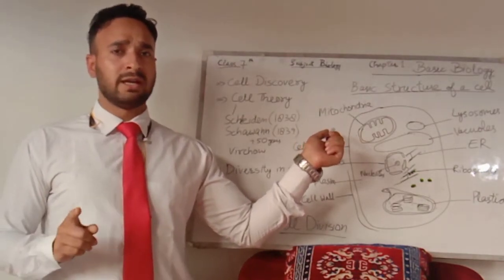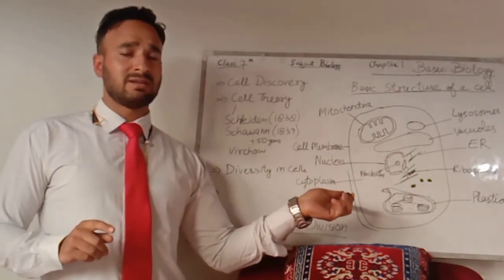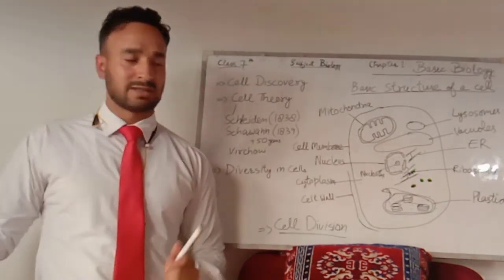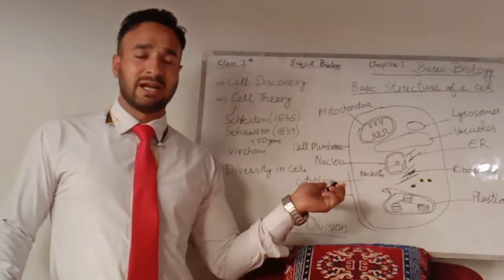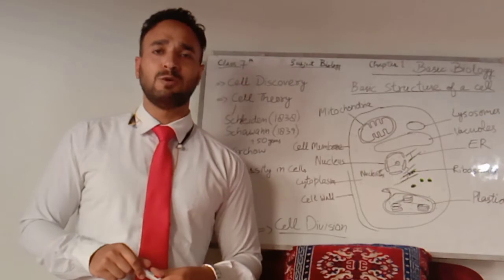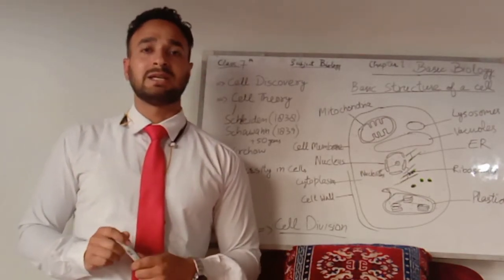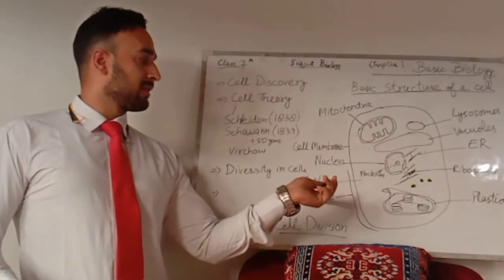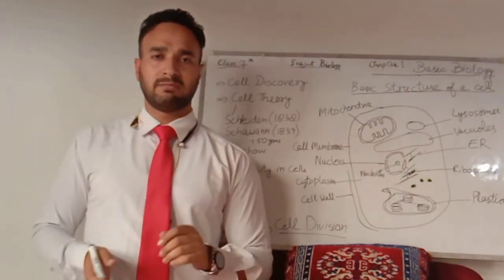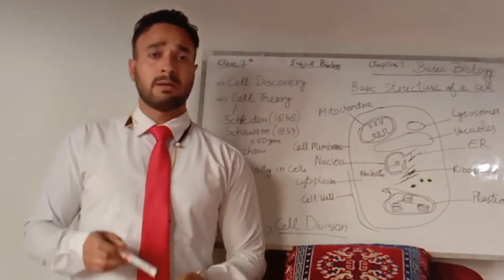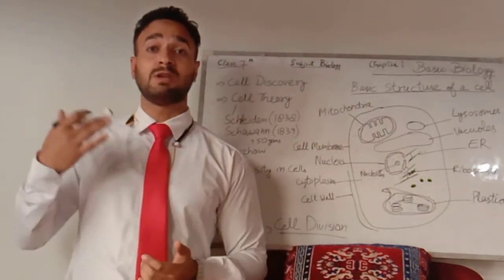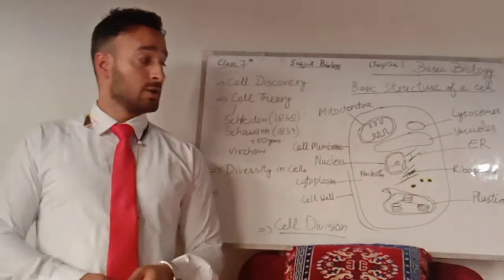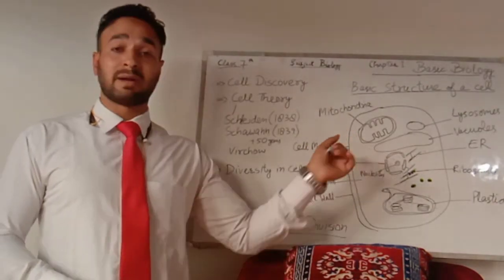There is one more layer called the cell wall, but the cell wall is only present in plants — it is absent in animals. The cell wall is made up of a material called cellulose. The cell wall is completely permeable, meaning it allows any substance to pass through it. But the cell membrane or plasma membrane is semi-permeable, or selectively permeable, meaning it allows only certain substances to pass through it.